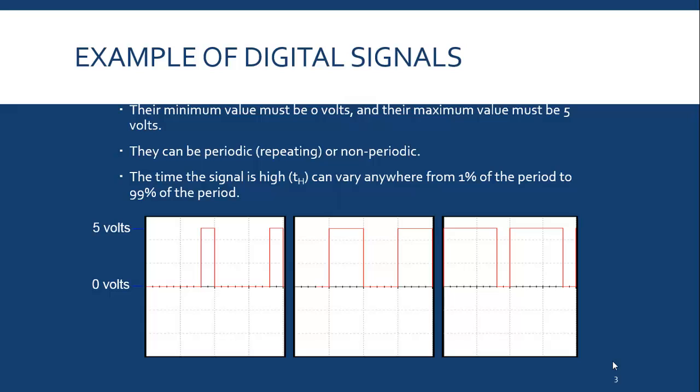Some examples of digital signals and what they look like would be here. They would have waveforms and the zero voltage here would represent off, and the five volts would represent on. So zero and one, on and off, high and low, true and false. Those would be the digital terms.